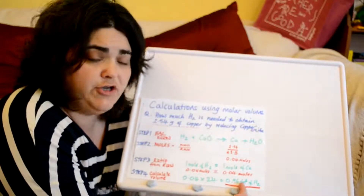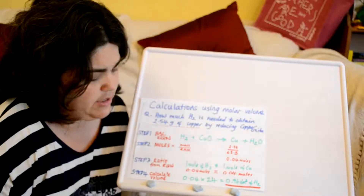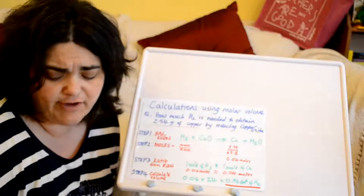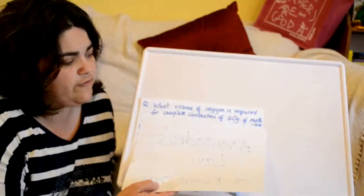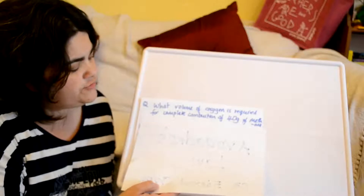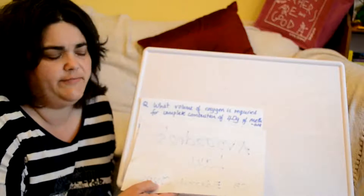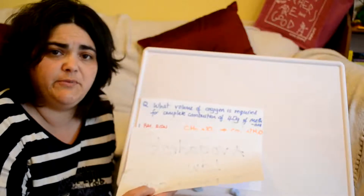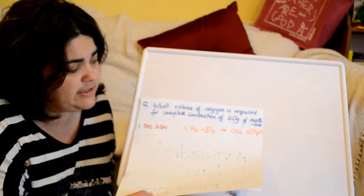Finally, we do our simple calculation to work out the volume. Moles times molar volume: 0.04 moles times 24 dm³ — according to Avogadro's law — gives us 0.96 dm³ of hydrogen. Always state the units as decimetres cubed unless otherwise stated, say what substance it is, and underline your answer.